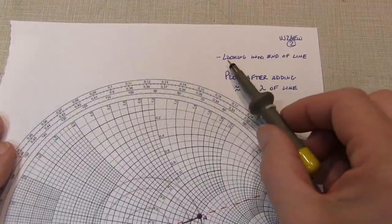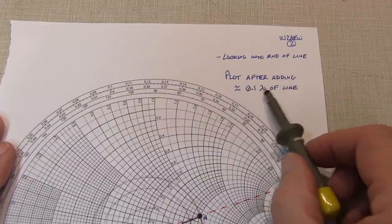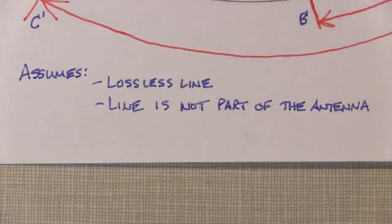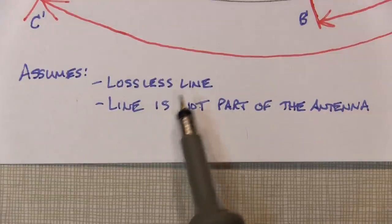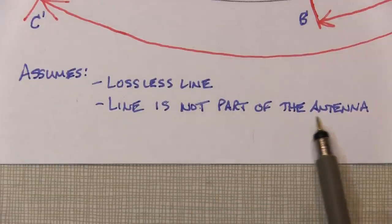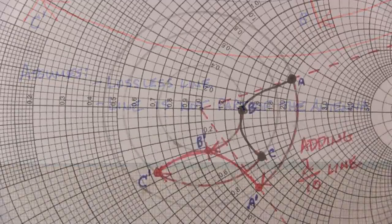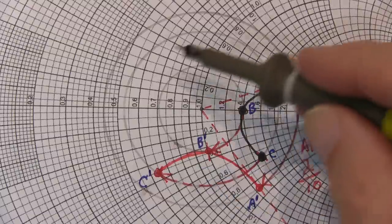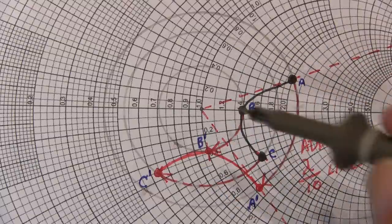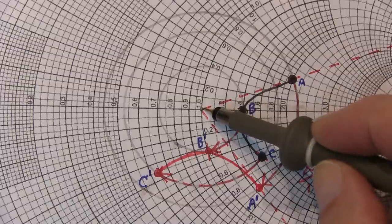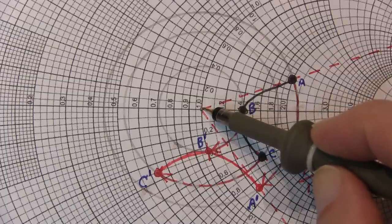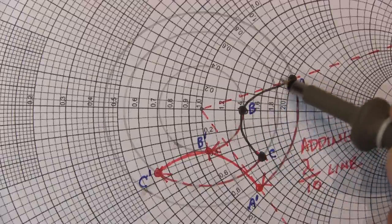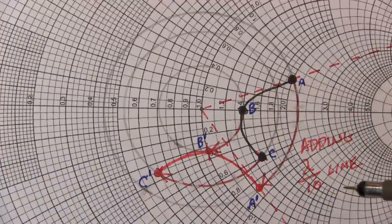So let's take a look at the impedance looking into the end of a line after we add about a tenth of a wavelength of transmission line. Now, our assumptions here are that we're dealing with lossless line, and that the line is not a significant part of the antenna. When we add or subtract transmission line, we're effectively rotating impedance around the center of the Smith chart, assuming that the center of the Smith chart is equal to Z0, or the characteristic impedance of the line.